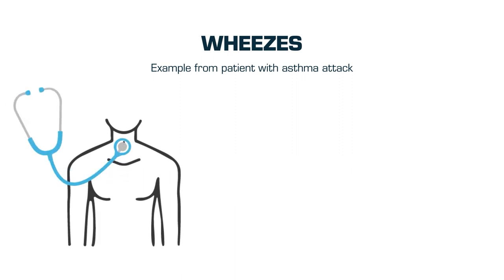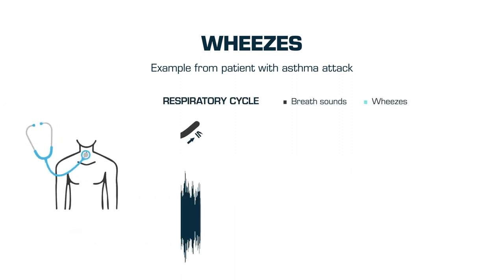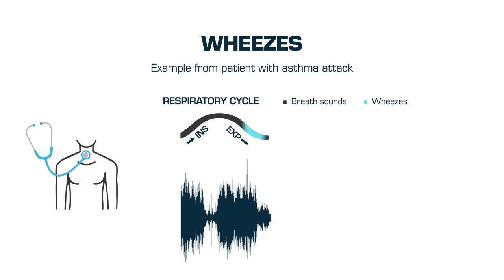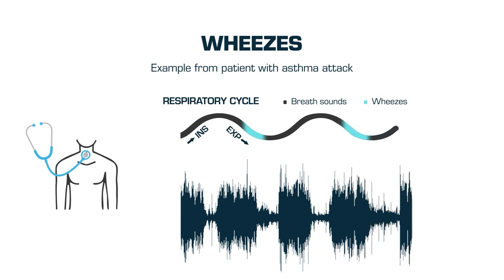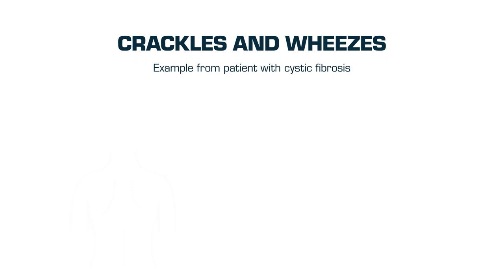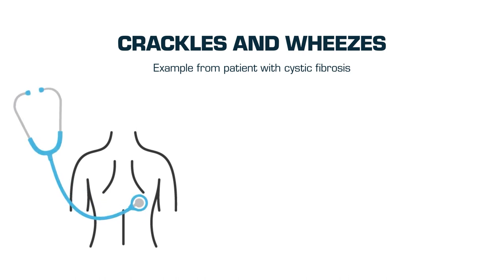In this example, the stethoscope has been placed on the trachea. It is common to find crackles and wheezes in the same patient. Now that we have heard both, we are going to listen to an example. A patient who has cystic fibrosis with hypoventilation is presented with coarse crackles and wheezes. In this example, auscultation is performed at the base of the lungs.